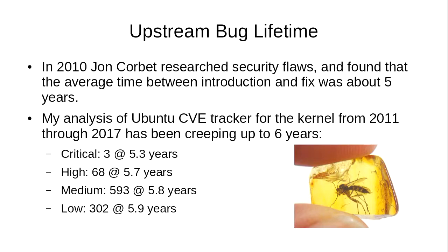Looking at upstream bug lifetime, Jon Corbet researched this in 2010 — when a CVE flaw was introduced and when it was fixed — figuring out the lifetime for those bugs, which is basically the window of opportunity an attacker has. I keep doing this every time I give this presentation, looking at the Ubuntu CVE tracker. The numbers are creeping up to six years on average. We've really only had about three critical bugs, but their lifetime is huge — introduced and then five years later, fixed.